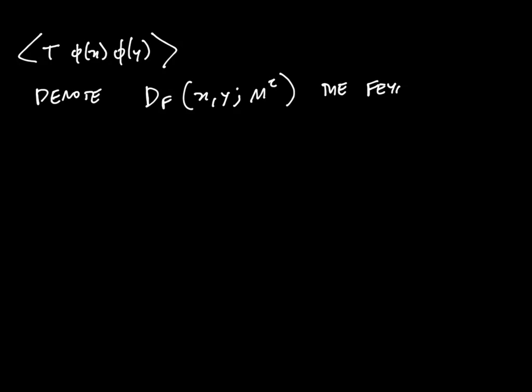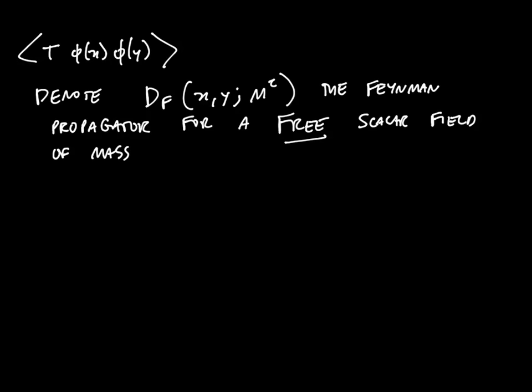Let me now ask what this thing can do in an interacting quantum field theory. First let me introduce some notation. Let's denote by D_F(x,y,M²) the Feynman propagator for a free scalar field of mass big M. So this is exactly the thing that we calculated previously.